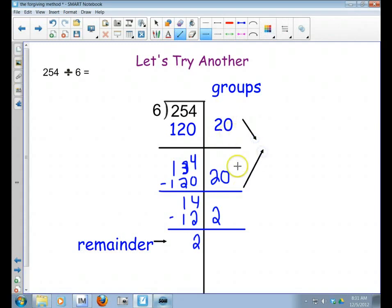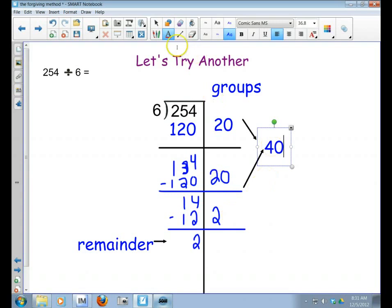Remainder. And then we're going to figure out our groups here. So I've got 20 and 20, and that is 40. And then I'm going to take my 2 and put that with my 40, and then I have 42. So I've got 42 and I've got a remainder of 2. So how do you check your work if you have a remainder? Well, that's what I'm going to show you right now.